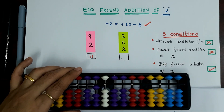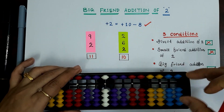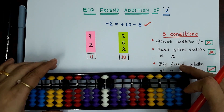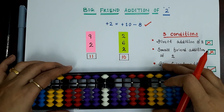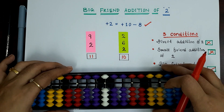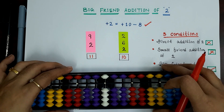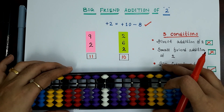Answer is 10. Now let's solve some more examples so that you will be more clear about how and when we can apply the big friend addition of 2.